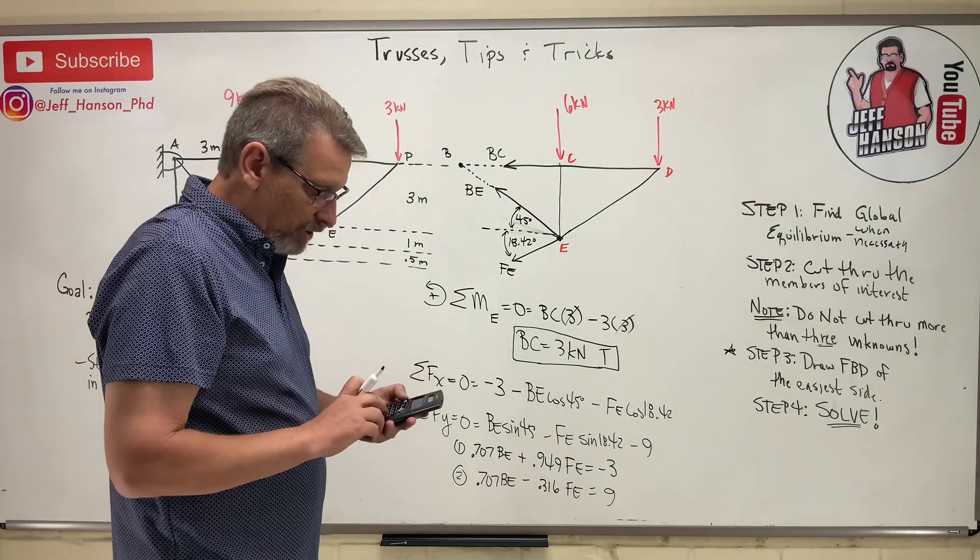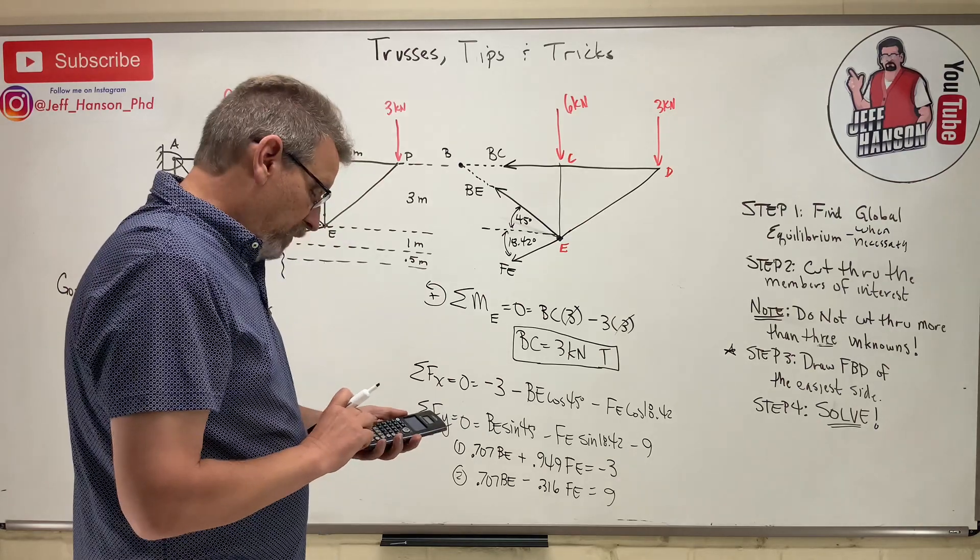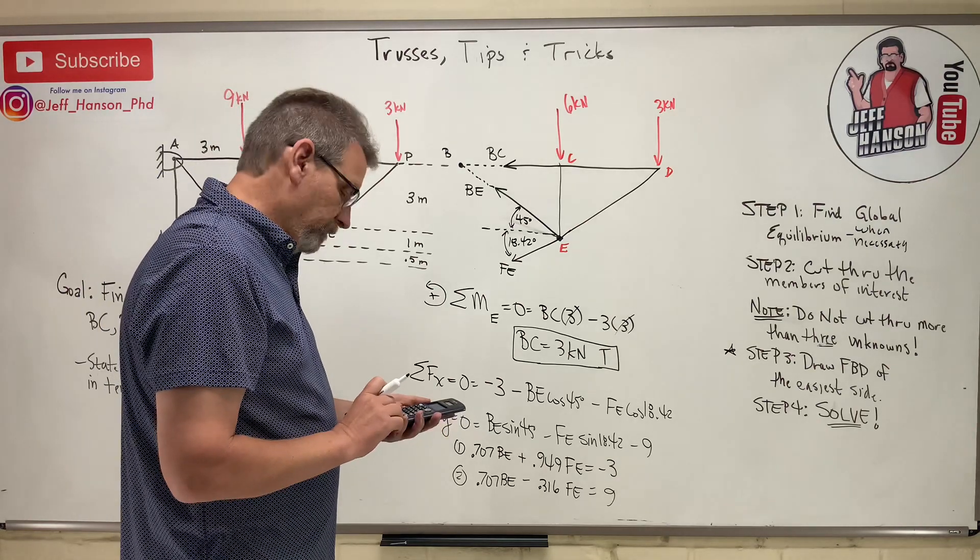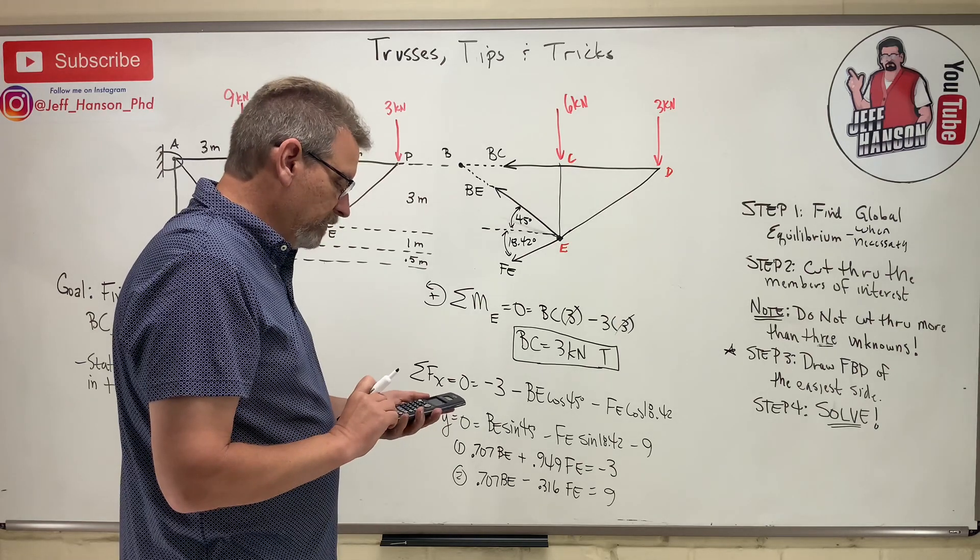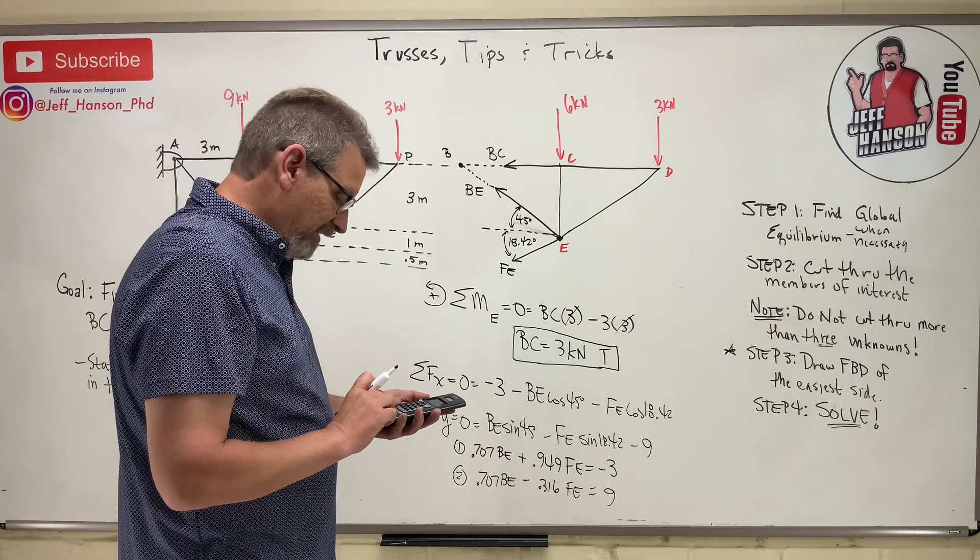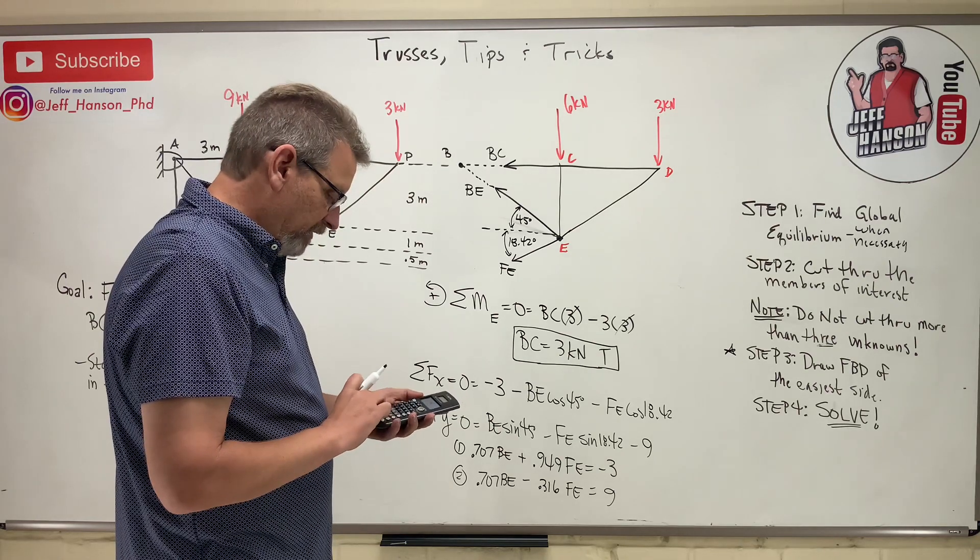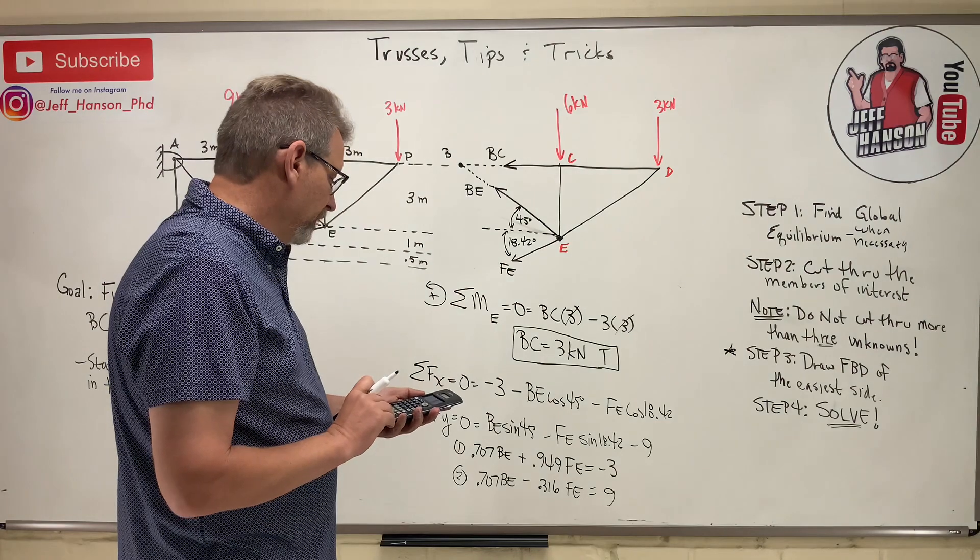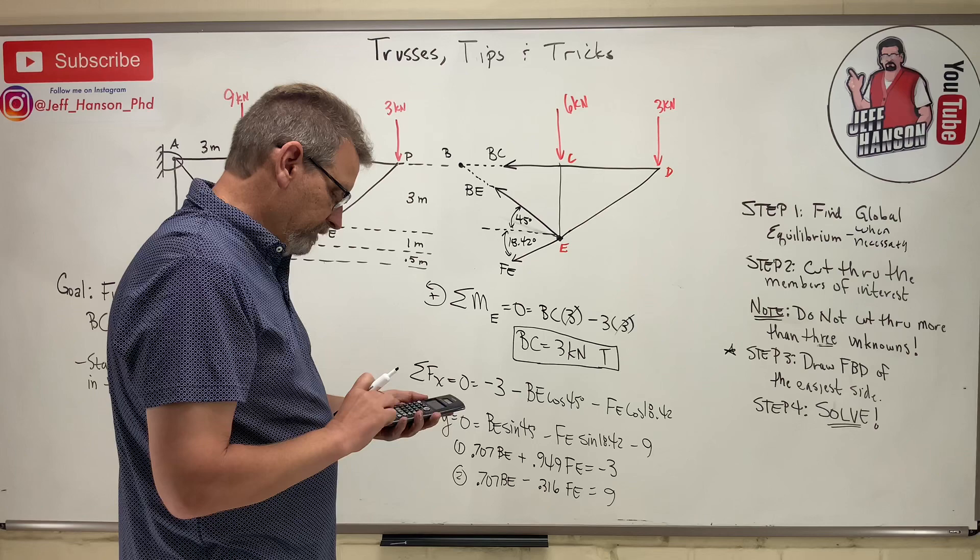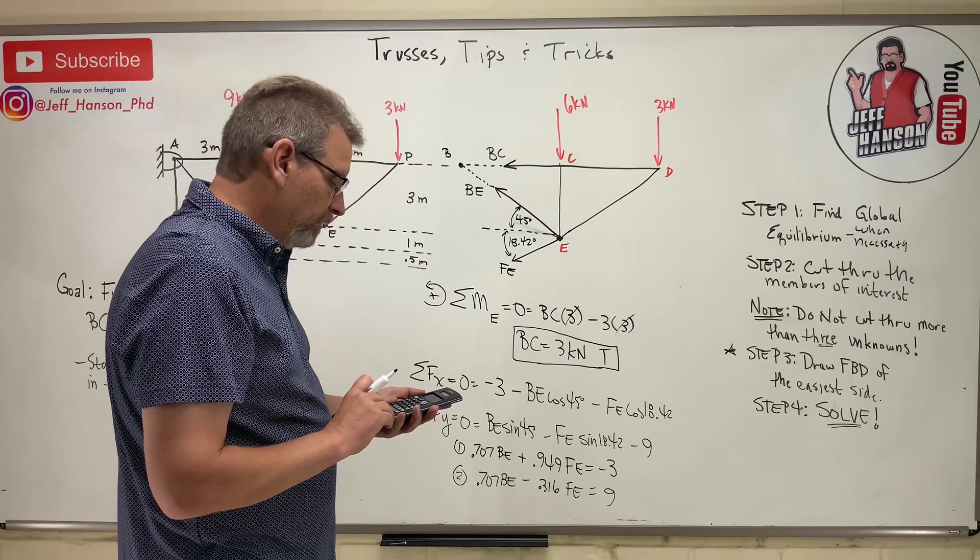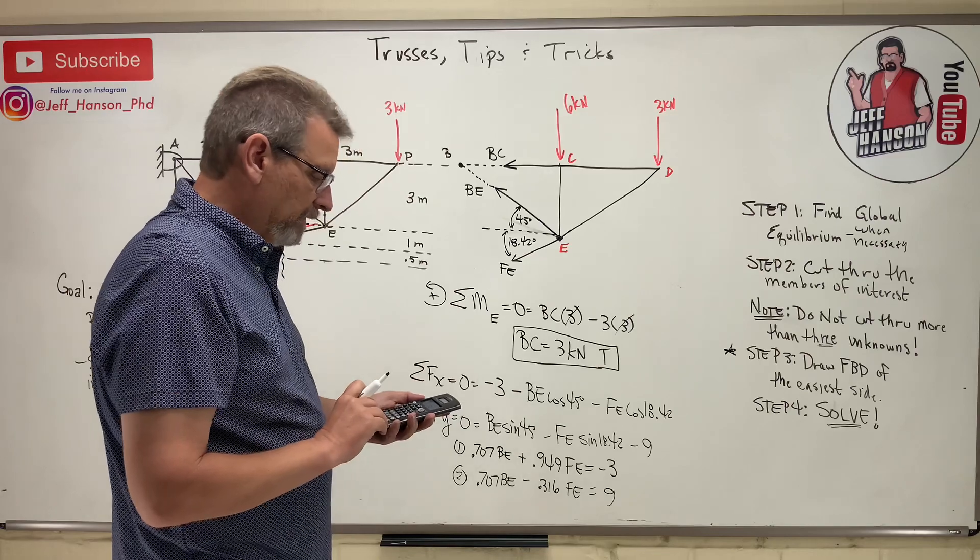Now it's just a matter of putting in my system solver and I'm done with this problem. So enter system solver here. 0.707 enter. 0.949 enter. Negative three enter. 0.707 enter. And then negative 0.316 enter. And then finally, 9. And solve.